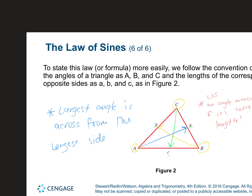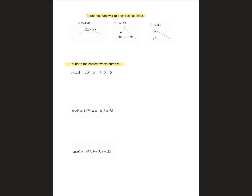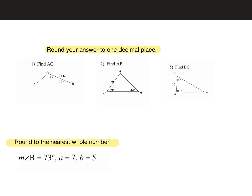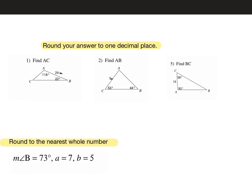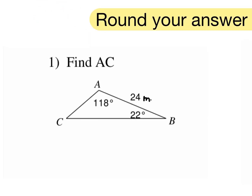Now we're going to do examples. For the first three, you're asked to find one piece of information. For example, they're asking us to find the measure from A to C — this one side. We can't use the Pythagorean Theorem because we don't have a right triangle. In order to use the Law of Sines, you have to have an angle measure and its corresponding side length.